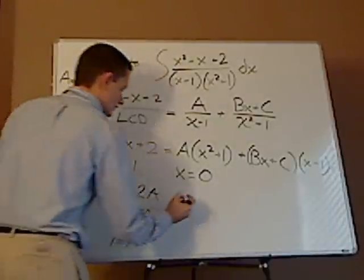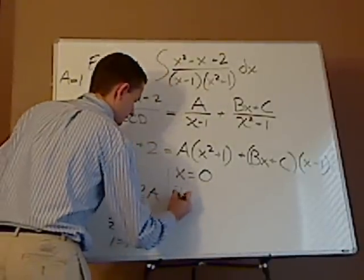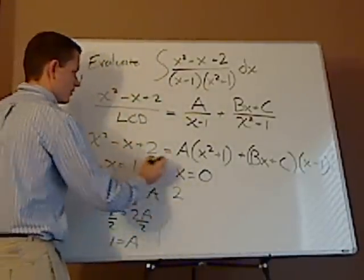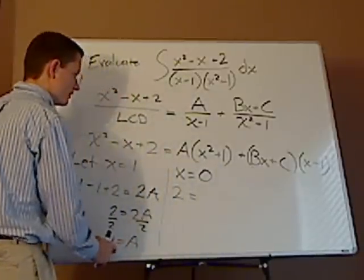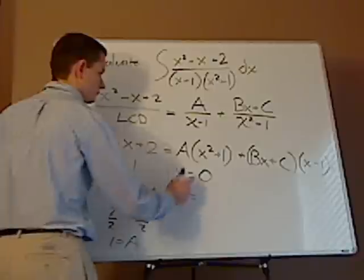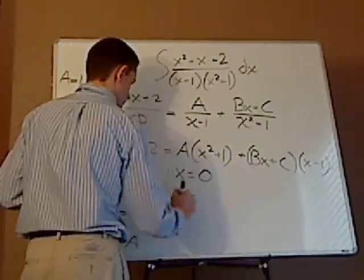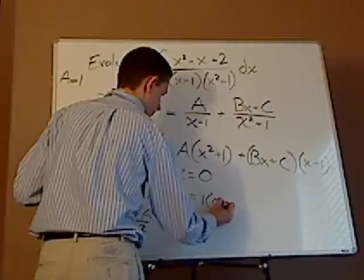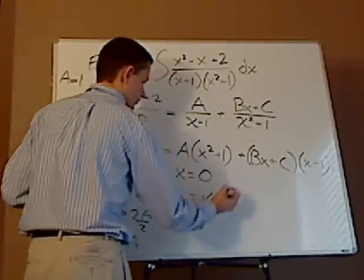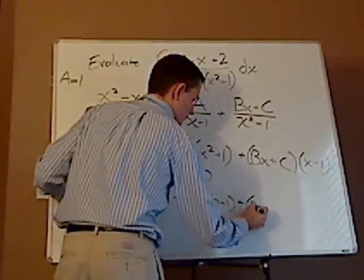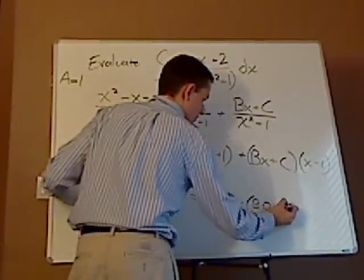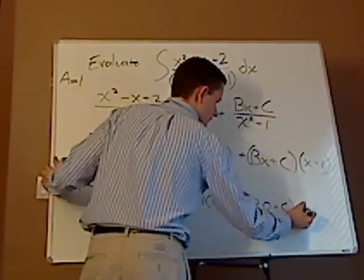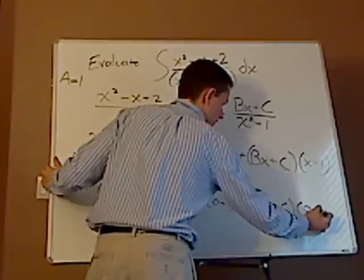0 on this side just leaves me with 2. So I have 2 on this side. I already know what a is. a is 1. So then I would have 0 plus 1. Let me write some of this work out. b times 0 plus c,